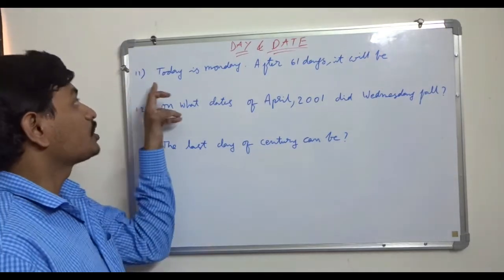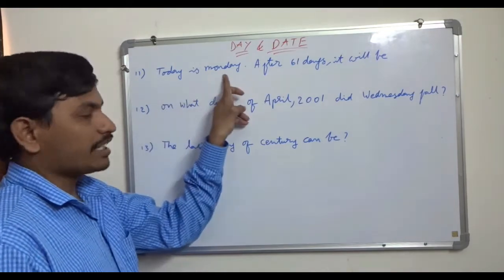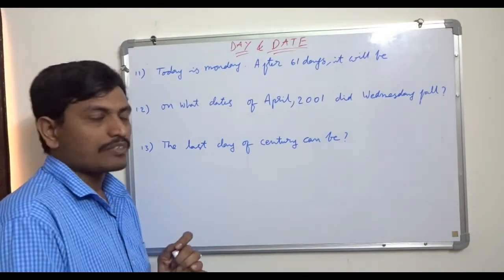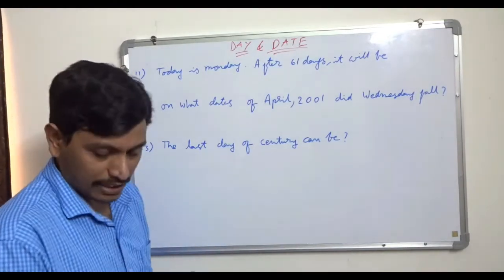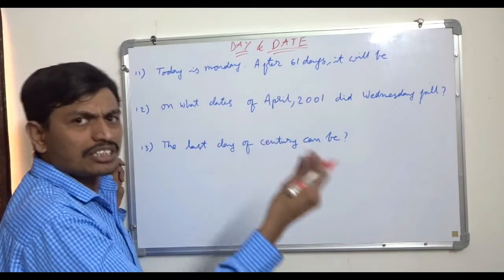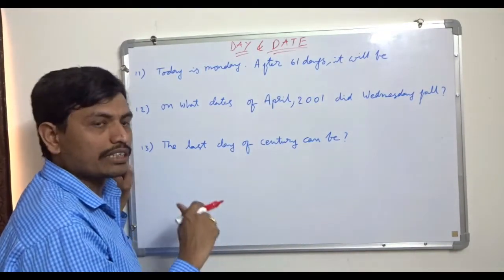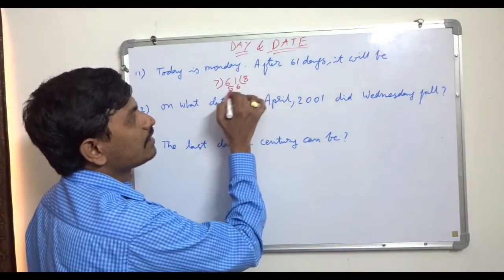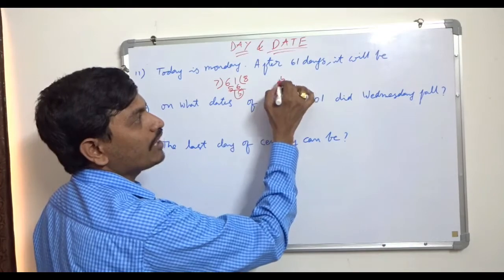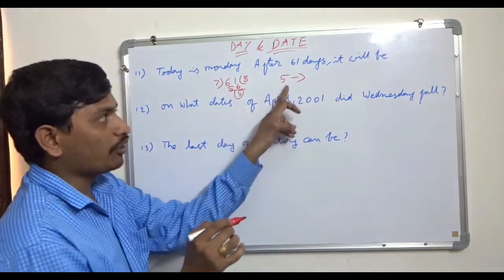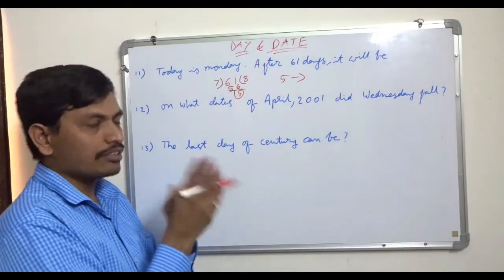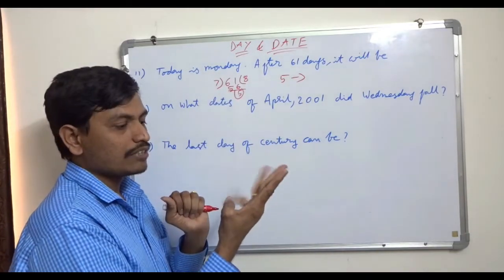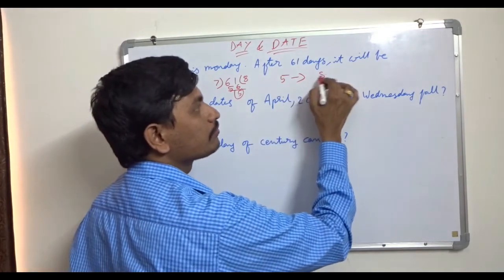Now we shall see problem 11. Suppose today is Monday — after 61 days, what day will it be? This is a very easy question that appears in competitive exams. We divide 61 by 7: 7 eights are 56, remainder is 5, so we take 5 odd days. Counting 5 days from Monday: Tuesday, Wednesday, Thursday, Friday, Saturday — it will fall on Saturday.